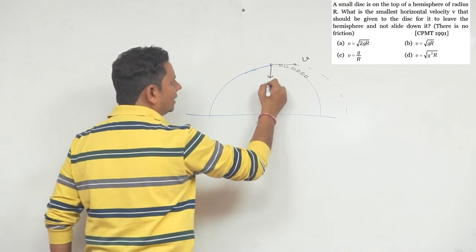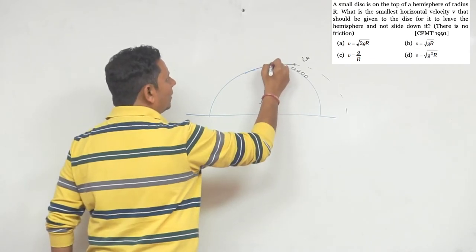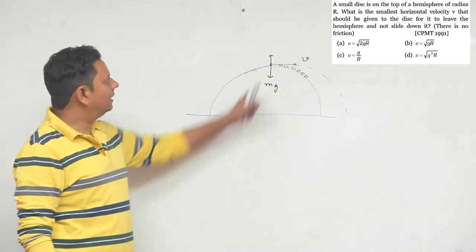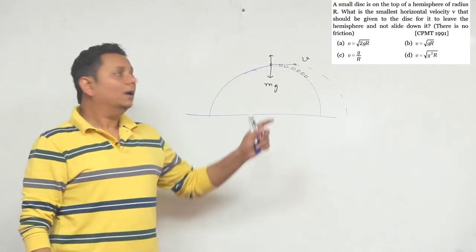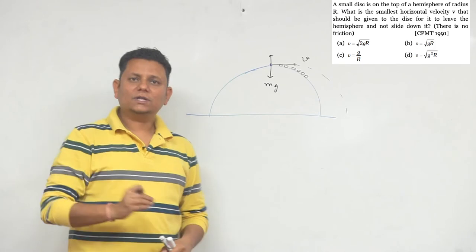there's a force acting on it downward which we call mg, and upward you have the normal force. But we want it to leave contact. So if it leaves contact, then its path should be a circular path.